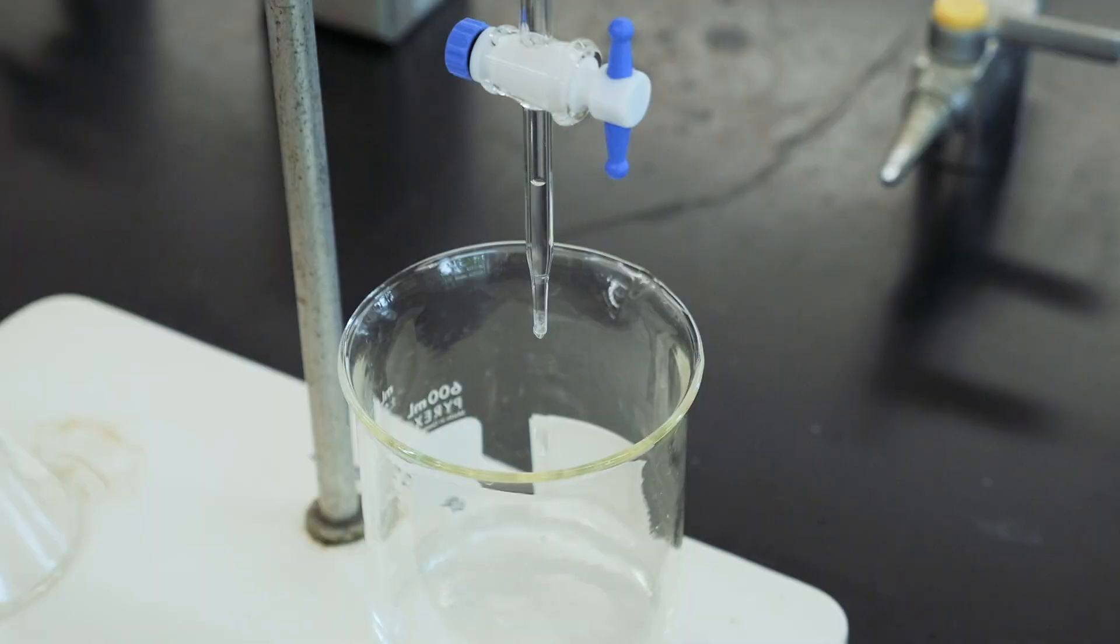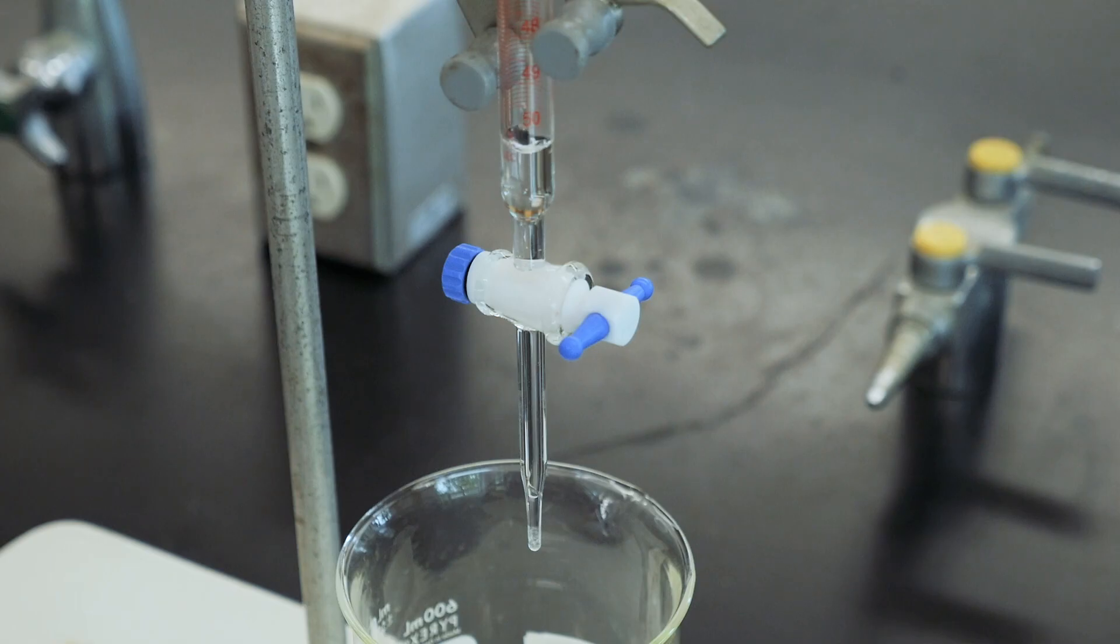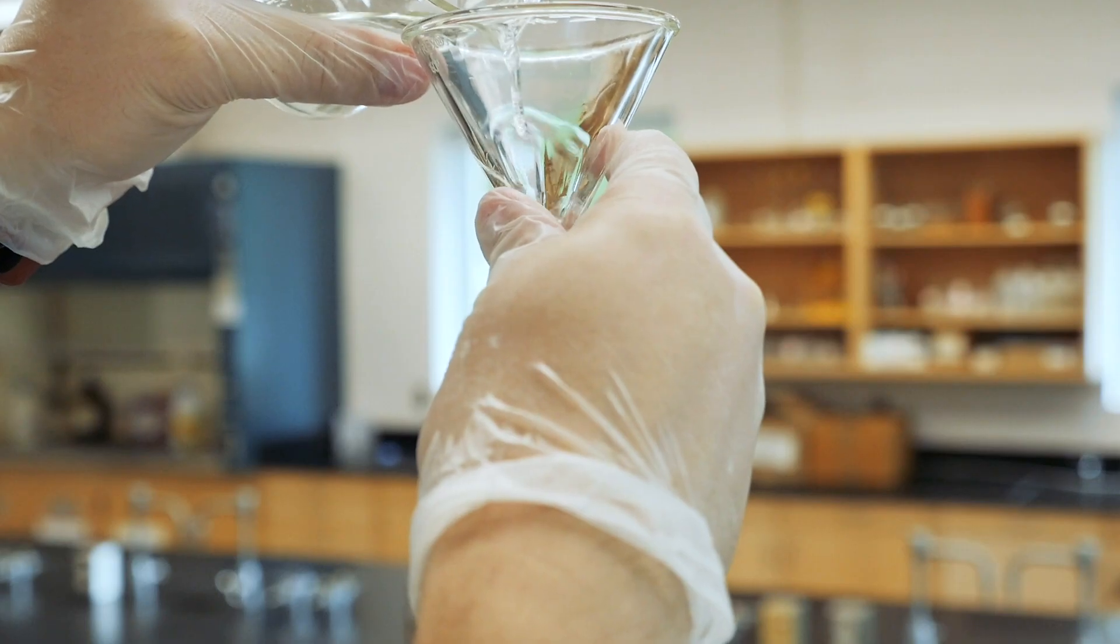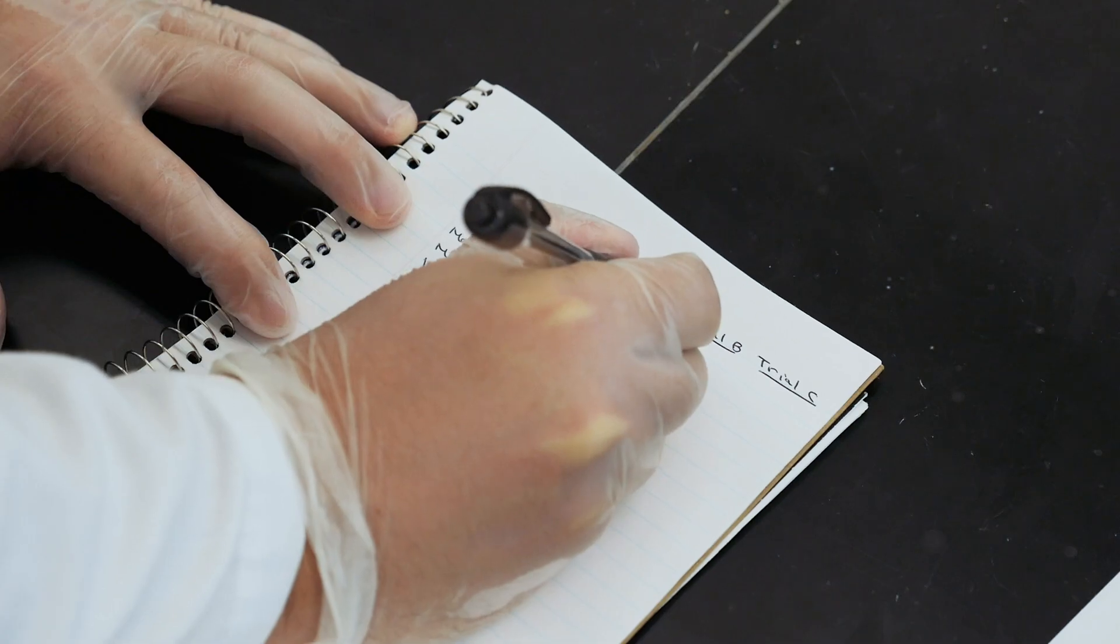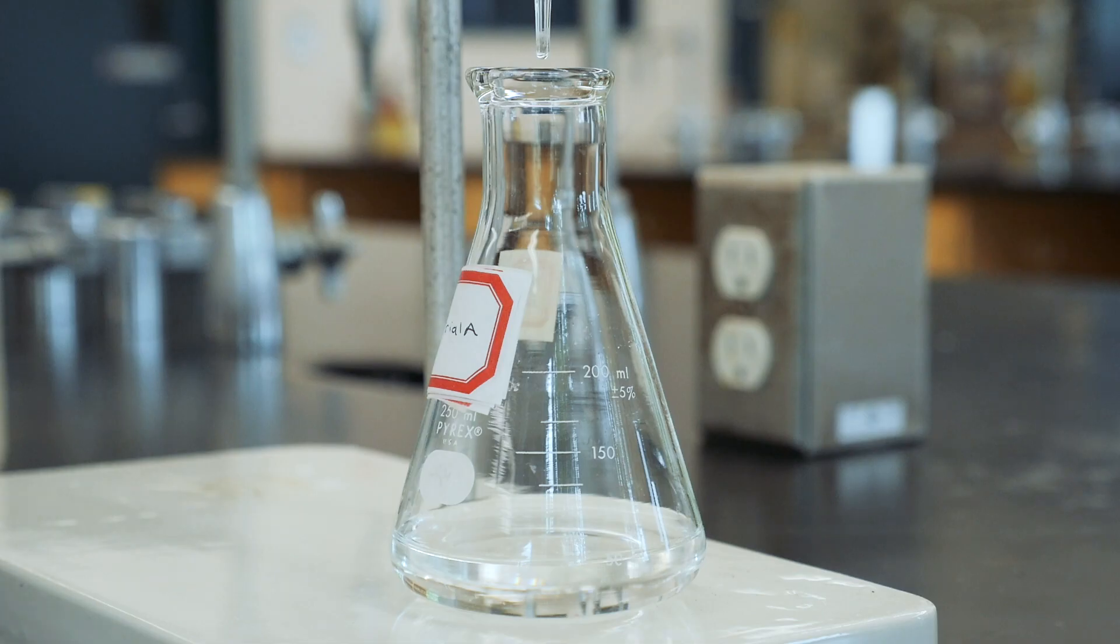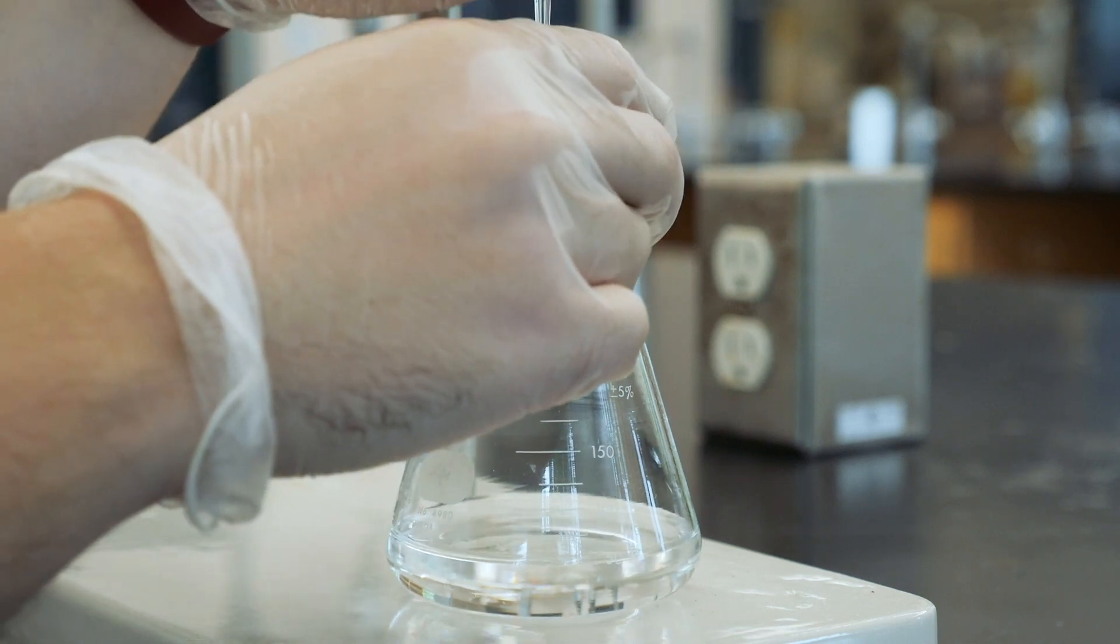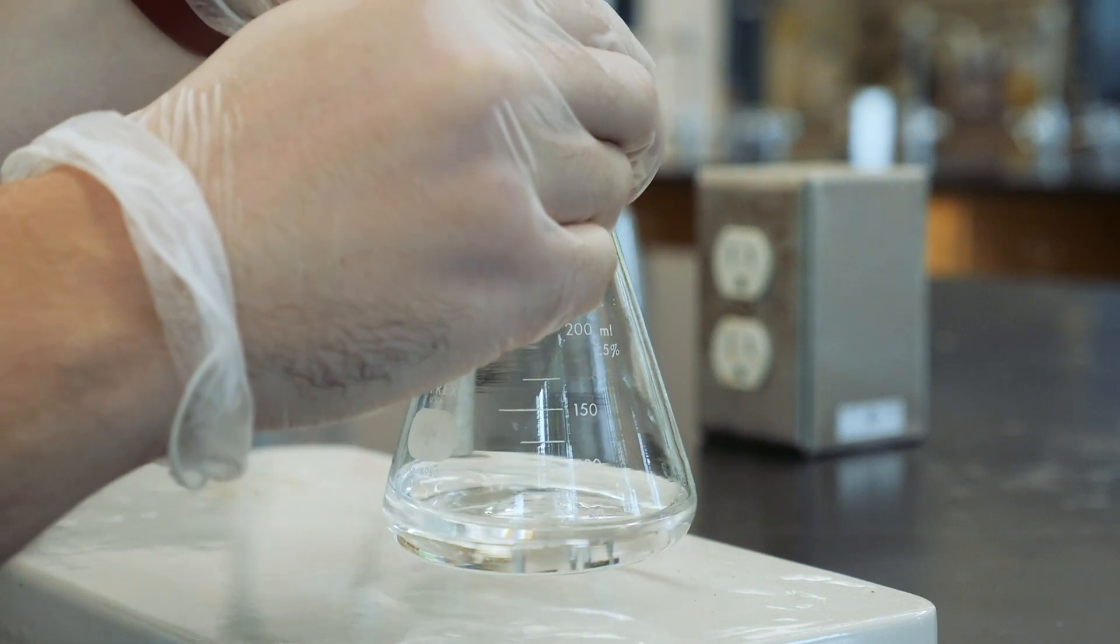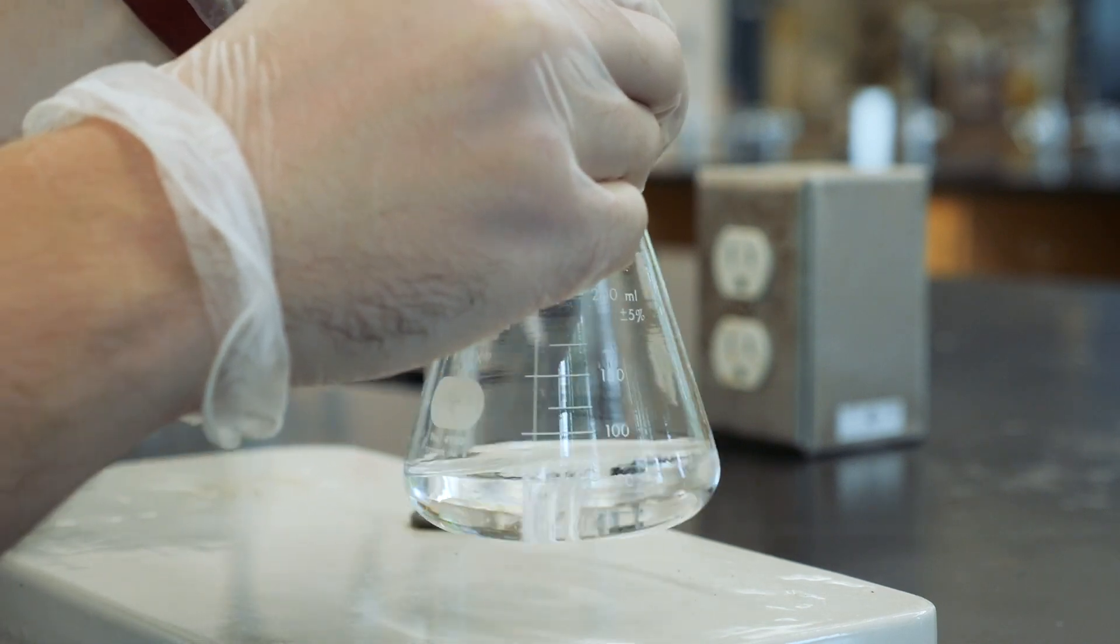Then fill the burette to about the 0.5 ml mark at the top. Take the initial burette reading. Titrate the KHP acid with your sodium hydroxide solution.